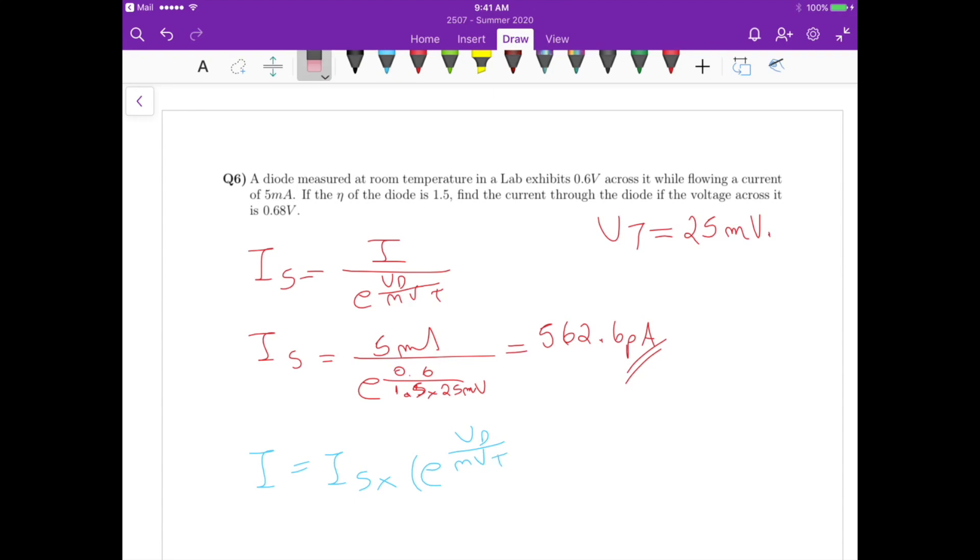We have a minus 1 factor here, but because IS is so small, like in the order of picoamperes, and usually in this case the current I would be in the order of milliampere, then that minus 1 factor doesn't actually affect the results. So you can keep the equation simplified this way.